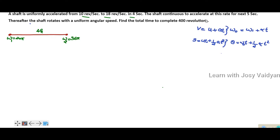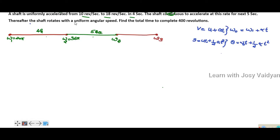Stage 2: The shaft continues to accelerate at the same rate for the next 5 seconds. Stage 3: Thereafter, the shaft rotates with uniform angular speed — meaning constant velocity with no further acceleration.